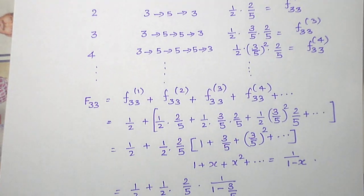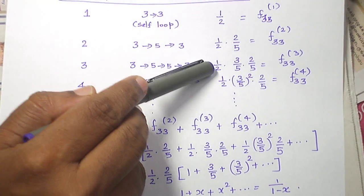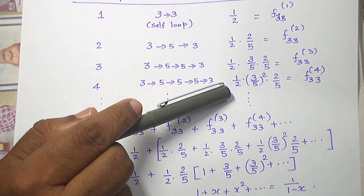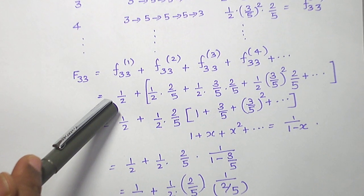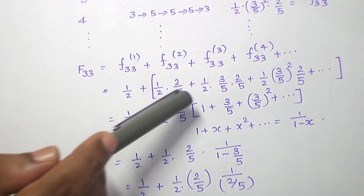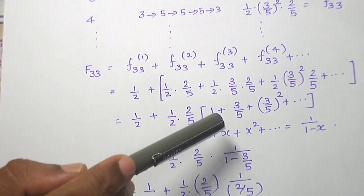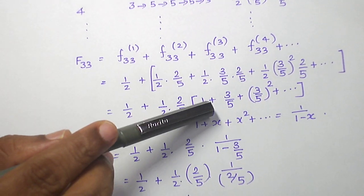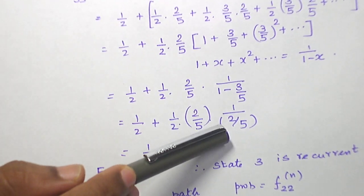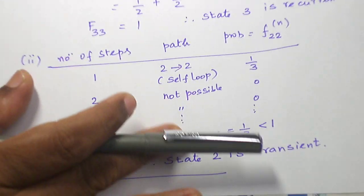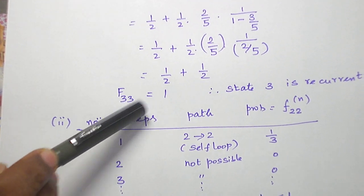When we add all the first time return probabilities: the first term is one by two; the second is one by two times two by five; the third is one by two times three by five times two by five; the fourth is one by two times (three by five) squared times two by five, and so on. Combining all terms except the first, we take out common factors one by two and two by five, giving a geometric series one plus (three by five) plus (three by five) squared plus ... whose sum is one over (one minus three by five) = one over (two by five). The two by five cancels, giving one by two plus one by two equals one. So the first time return probability F33 equals 1, meaning state three is a recurrent state.